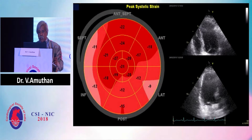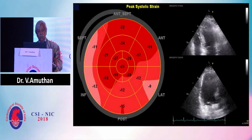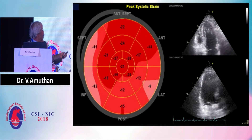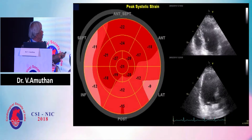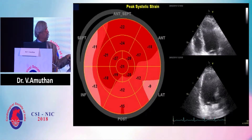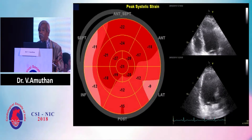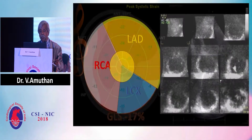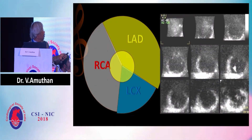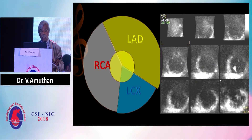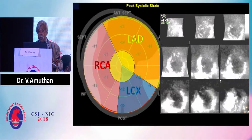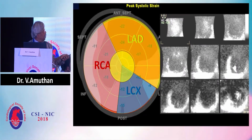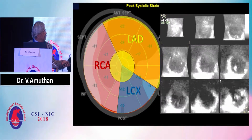When you apply strain imaging, you can see there is abnormality in the inferior septum, inferior wall, and also in the anterolateral wall, which was not seen on regional wall motion assessment. This is the territory-wise display: LAD, RCA, and LCX. It is very easy to identify, and these are the images from apex to base.